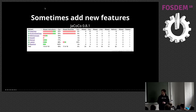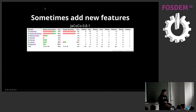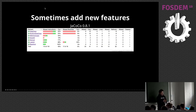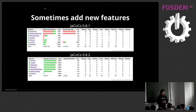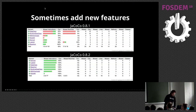For example, code coverage reports of JaCoCo version 0.8.1 for some Kotlin classes was looking like this. After some new features we implemented, without any changes in any tests, it started looking like this. Why is this happening? What are these features? This is exactly what this talk is about.